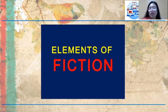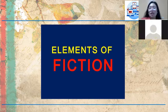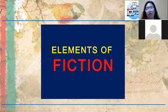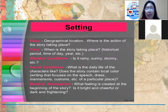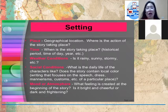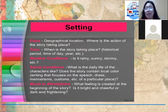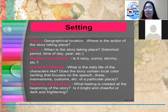Now, what are the elements of fiction — what makes up fictional stories? First, we have the setting. Setting has something to do with the place and time, or the where and when the story happened. Place refers to the geographical location — where the action of the story takes place. Time refers to when the story takes place: the historical period, time of day, time of year, and others.